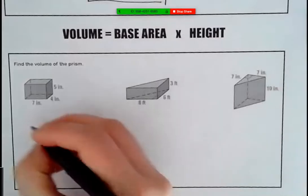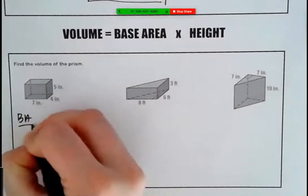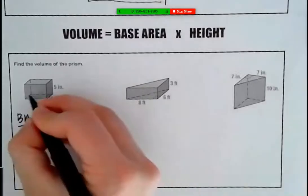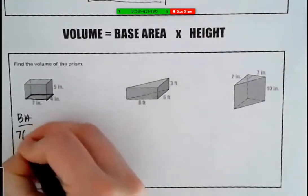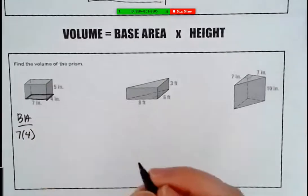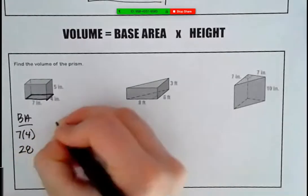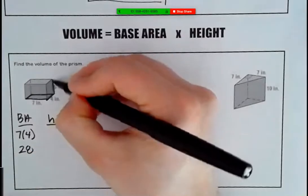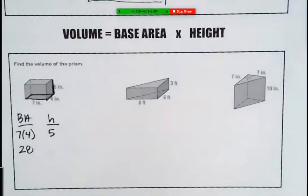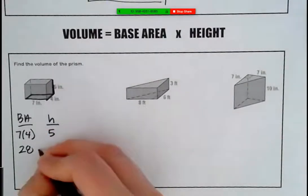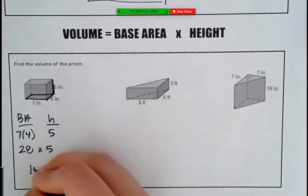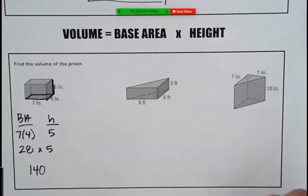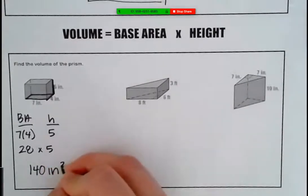So I hear someone's already starting on this first rectangular prism. What are the dimensions of my base down there? Seven times four. So we're going to take seven times four, which is 28. And now what is our height of that prism? Five. So now we have to take 28 times five, which is 140 inches cubed. Perfect.